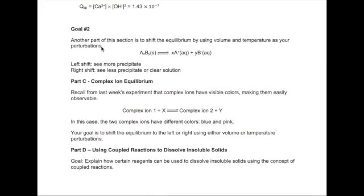Alright, in the second part of the solubility equilibrium experiment, once you've made your precipitate, you have to test how volume and temperature affects the appearance of your precipitate. Given this reaction that you have, a left shift would result in more solid being formed, while a right shift results in less solid or a clearer solution.